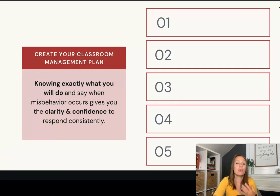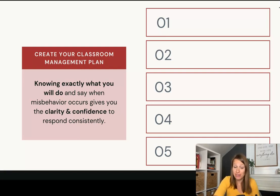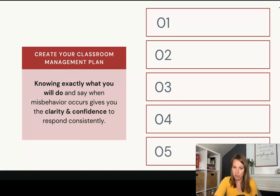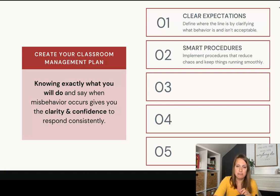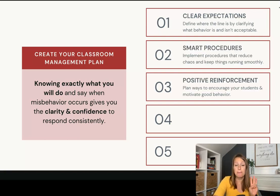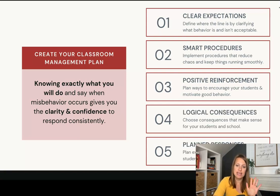I want to show you what a classroom management plan looks like and the five areas covered in this program to help make sure you're ready to reduce disruptions. Your classroom management plan helps you know exactly what to say and do when misbehavior occurs, giving you confidence and clarity to be consistent. The five areas are: clear expectations, smart procedures, positive reinforcement, logical consequences, and planned responses.